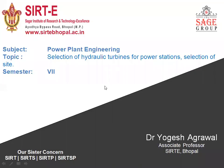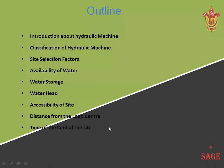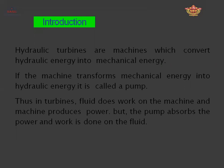Good afternoon, dear students. Today I will discuss the selection of hydraulic turbines for power generation and the selection of the site. This is part of Unit 4 and the last lecture of the unit. The subject name is Power Plant Engineering. The outline of today's lecture includes: introduction to hydraulic machines, classification of hydraulic machines, and site selection factors.